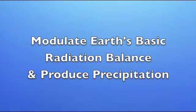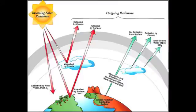However, clouds' most important roles in climate are to modulate Earth's basic radiation balance and to produce precipitation. The law of conservation of energy requires that the energy absorbed by the Earth from the Sun balance the energy radiated by the Earth back into space.